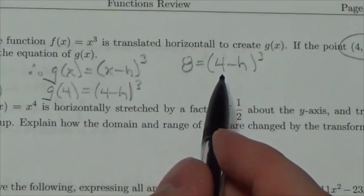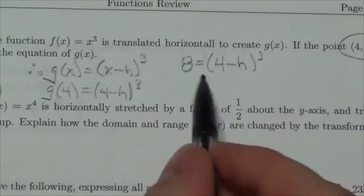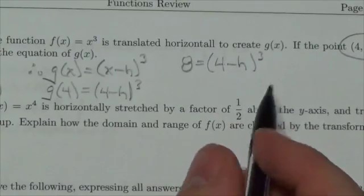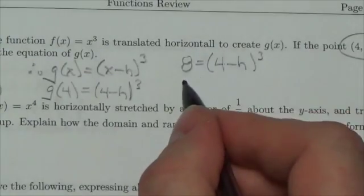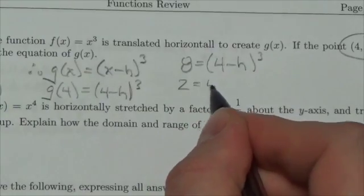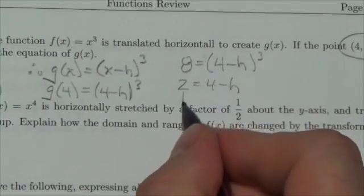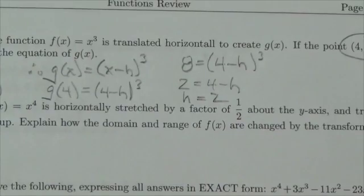Now, the reason I said before, resist the temptation to expand that out is here because all we have to do here is cube root this. If you cube root both sides, we'll get 2 is equal to 4 minus h. So, h is 2.